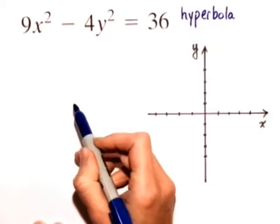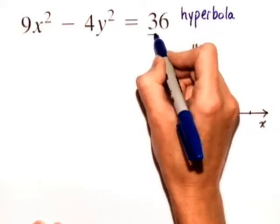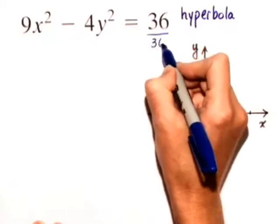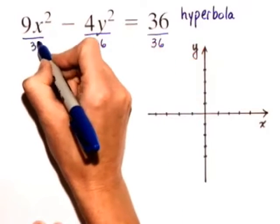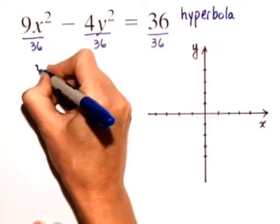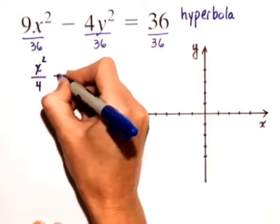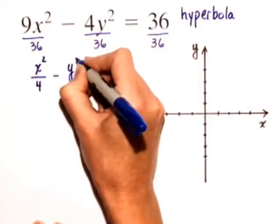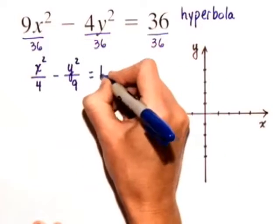Now, we want to get the hyperbola in standard form, so we need a 1 on the right-hand side, and we'll divide each term on both sides by 36. Now, we have x squared over 4 minus y squared over 9 is equal to 1.